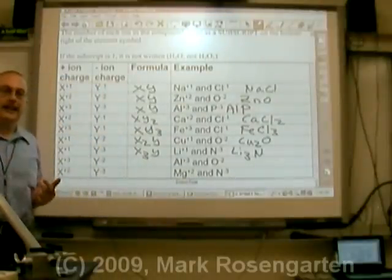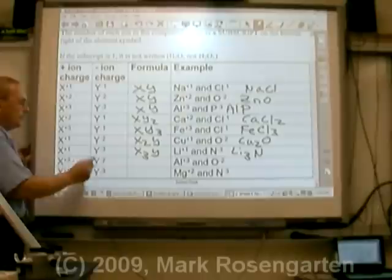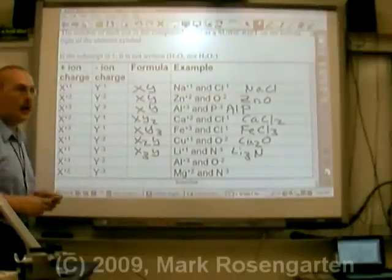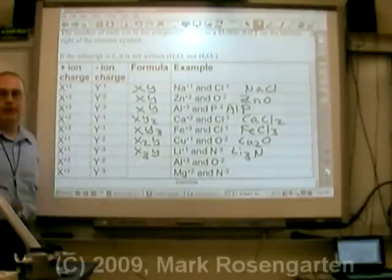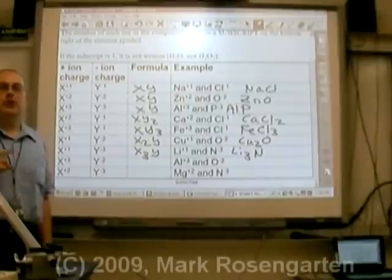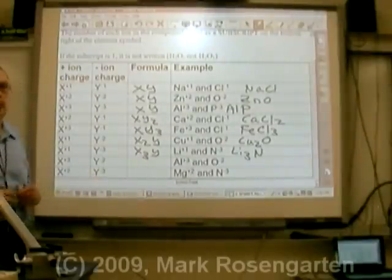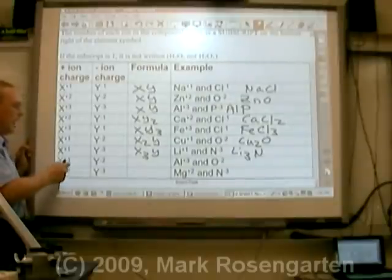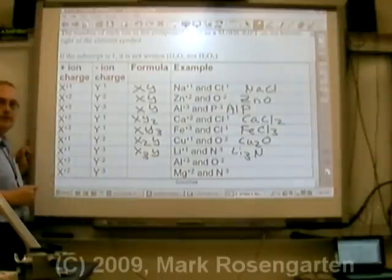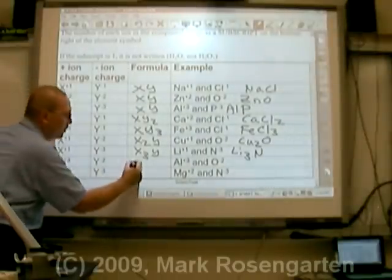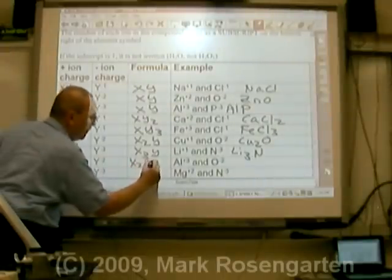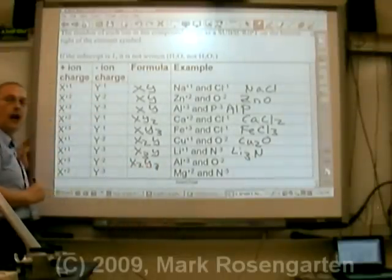What do you do if they don't cancel out nice and easy, like plus three and minus two? Here, you're going to use the same tactic you used for finding the lowest common denominator. Multiply the two numbers together, and that will give you what the total charge needs to be after the compound is formed. Three times two is six. Therefore, we need X to be a total of plus six and Y to be a total of minus six. How many plus threes makes plus six? Two of them. How many minus twos make minus six? Three of them. X2Y3.